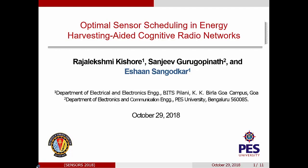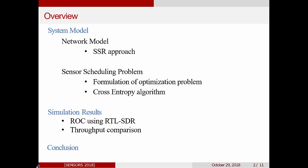So I'll be presenting my paper, Optimal Sensor Scheduling in Energy-Harvesting-Aided Cognitive Radio Networks. In this presentation, I'll be touching the following topics. I'll discuss the network model, focusing on the SSR approach. Then I'll be discussing the sensor-to-channel assignment matrix and form an optimization problem, and then solve the optimization problem using the cross-entropy algorithm.